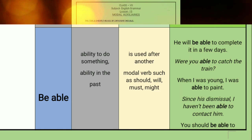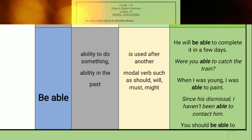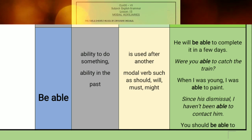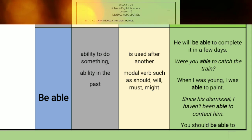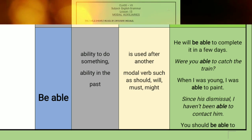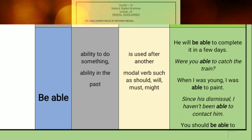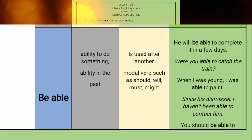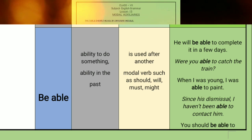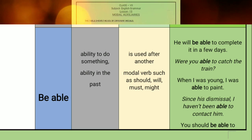The third modal is 'be able,' which expresses the ability to do something, including ability in the past. It is used after another modal verb such as should, will, must, or might. Example: 'He will be able to complete it in a few days' — this speaks about the capability of the subject. That's all about modal auxiliaries. I hope you understand, and please do not forget to practice the exercises which are given.